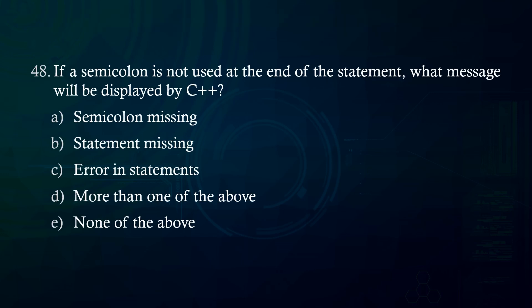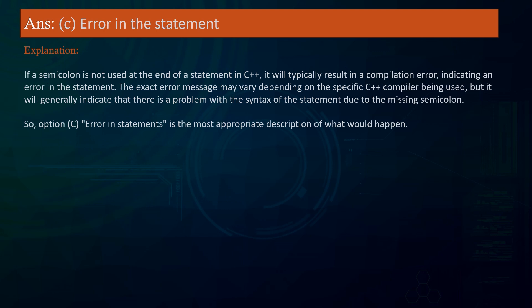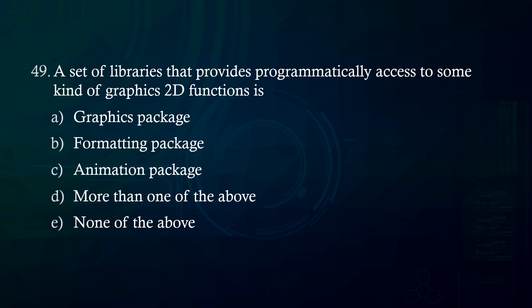If a semicolon is not used at the end of the statement, what message will be displayed by C? A. Semicolon missing B. Statement missing C. Error in statements D. More than one of the above E. None of the above. Answer: Error in the statement. Explanation: If a semicolon is not used at the end of a statement in C, it will typically result in a compilation error indicating an error in the statement. The exact error message may vary by compiler, but will generally indicate a problem with the syntax due to the missing semicolon. Option C — Error in statements — is the most appropriate description.